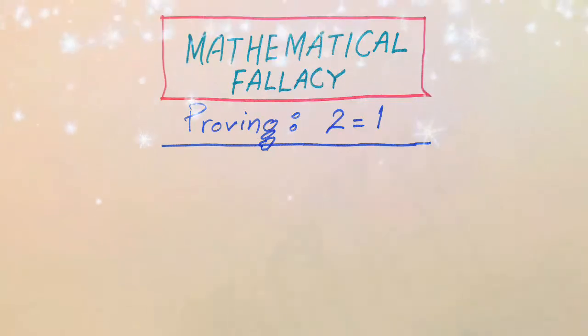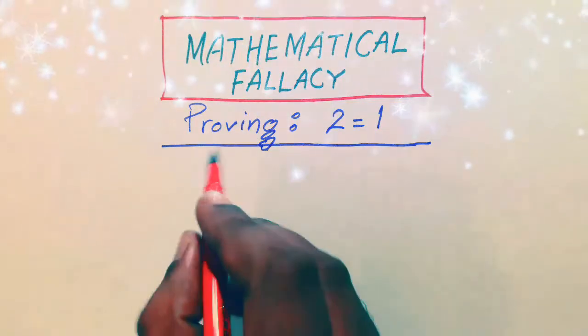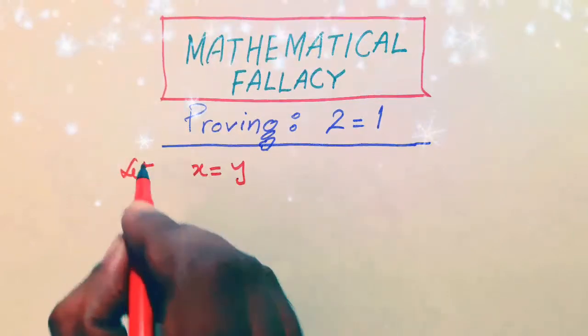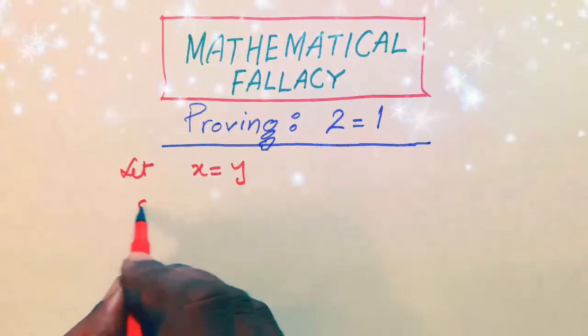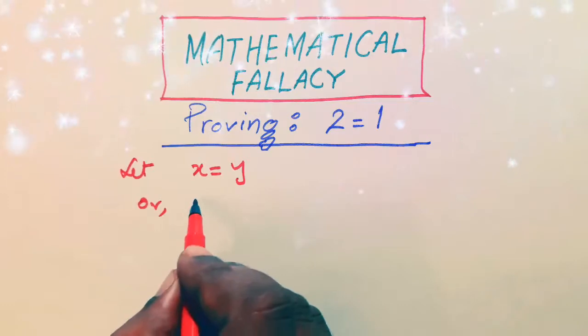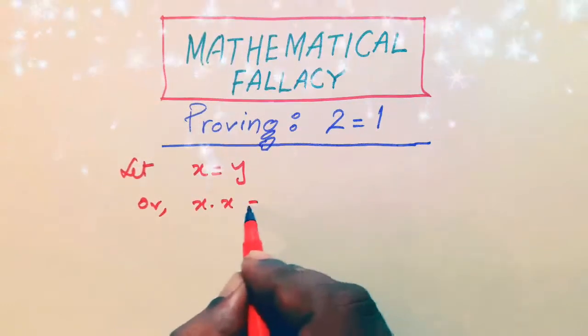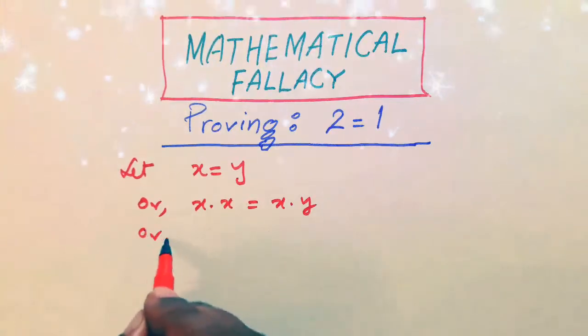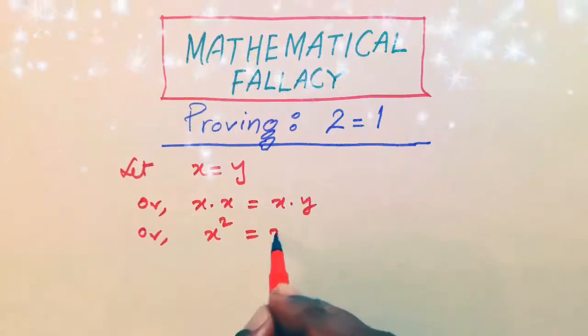Let us consider x is equal to y. So multiplying both sides by x, we shall find x into x is equal to x into y. So that this is x square is equal to xy.